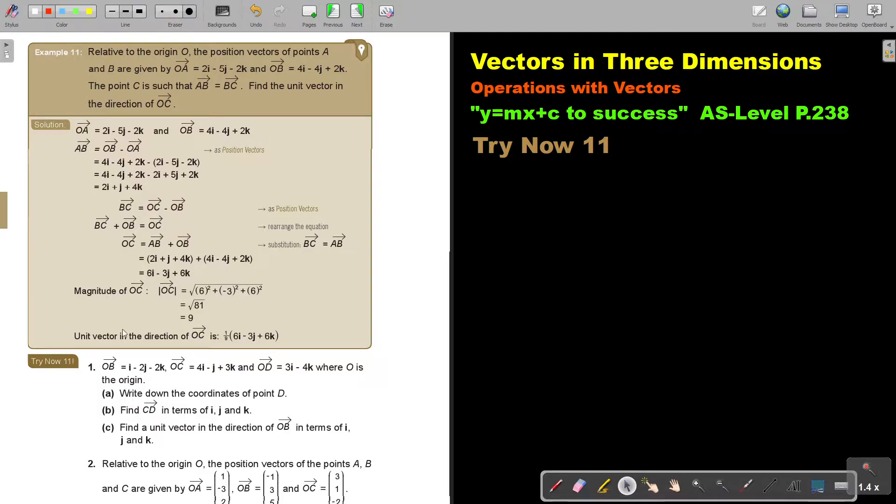Let's look at another example. Relative to the origin O, the position vectors of points A and B are given as OA position vector and OB position vector. The point C is such that AB equals BC. Find the unit vector in the direction of OC.